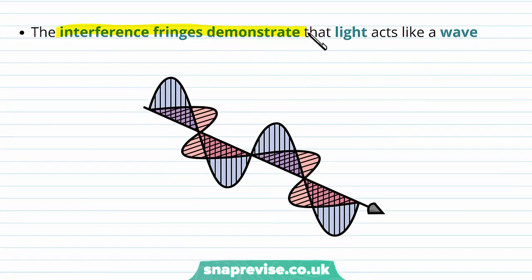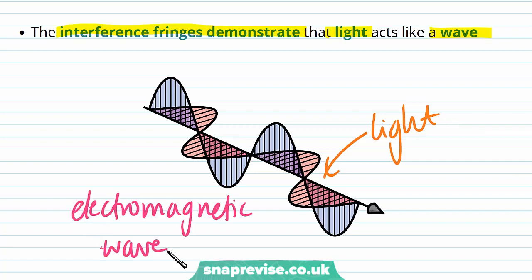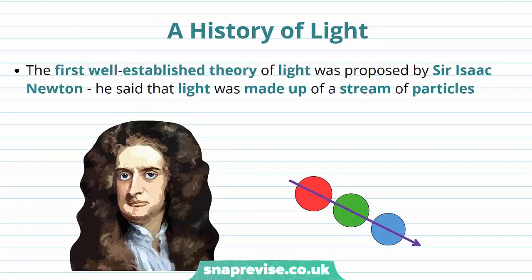The interference fringes demonstrate that light acts like a wave. Light is an electromagnetic wave, and the fact that two coherent light sources interfere with each other and produce a pattern demonstrates the wave properties of light. Now that we've seen that Young's double slit experiment demonstrated the wave nature of light, we're going to look at a history of light and examine some of the theories scientists previously proposed about the nature of light.